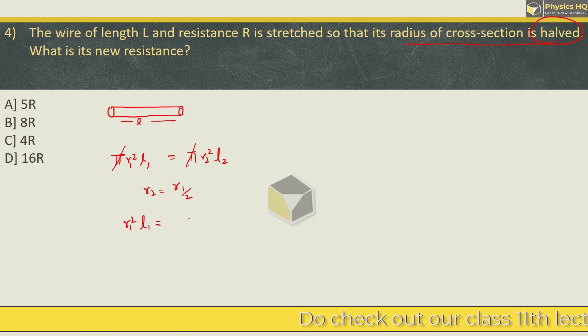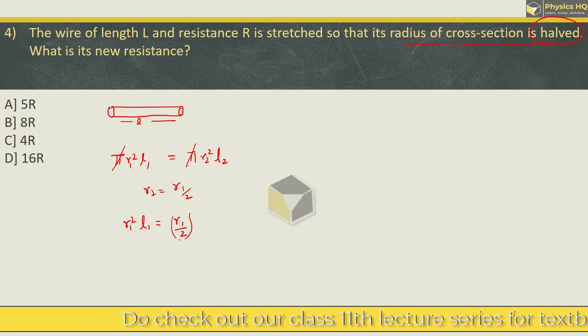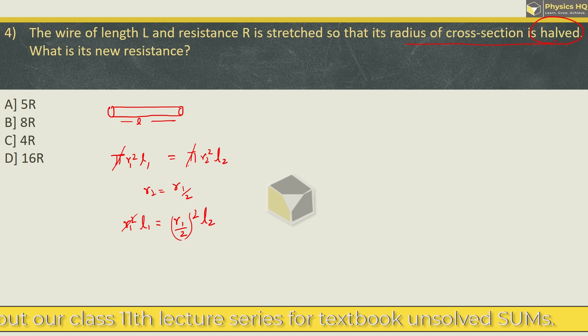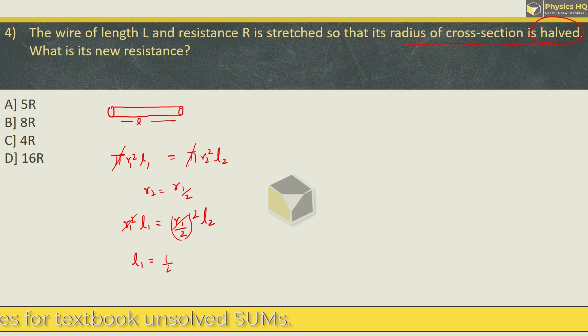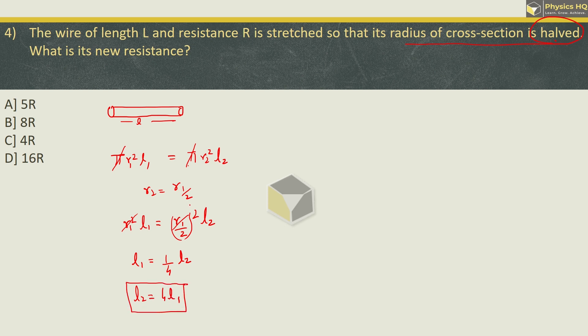So volumes are equal. Now we can cancel this out. The question they have given is: after stretching the radius of cross section is half of the previous one. Means R2 is R1 by 2. Let us put it over here. So you got R1 square L1 equals R2, R1 by 2 whole square into L2. Now we can cancel. What we are left with is: the old length is 1/4 of the new length. So L2 is 4 times L1. This is what we have got.